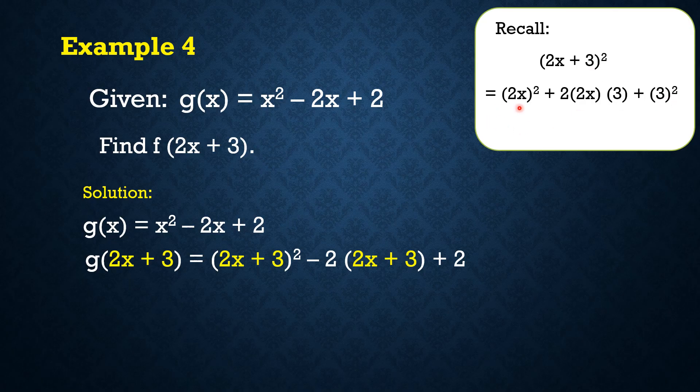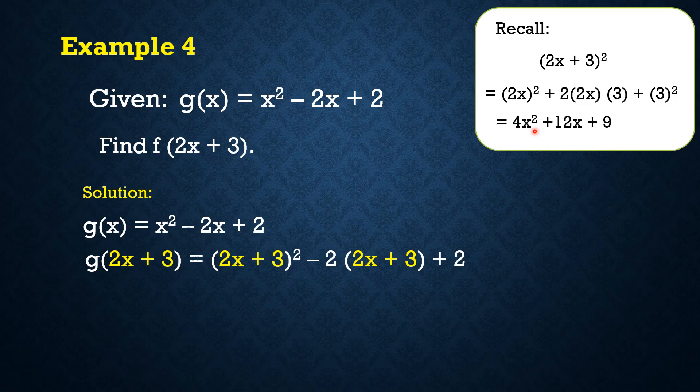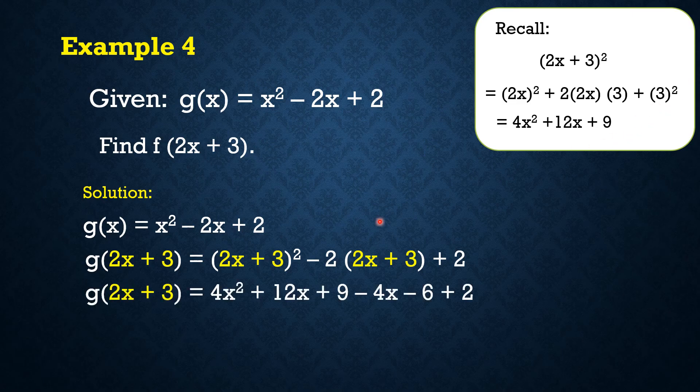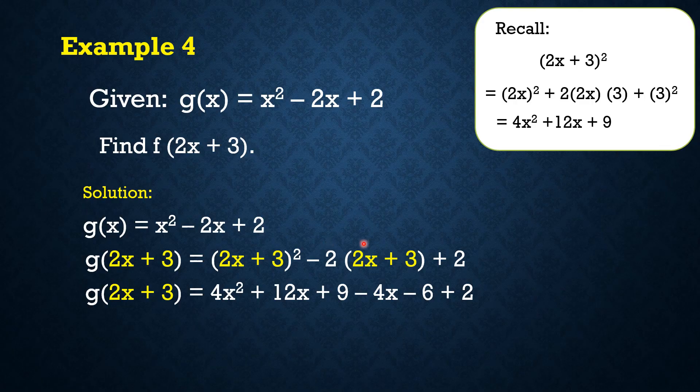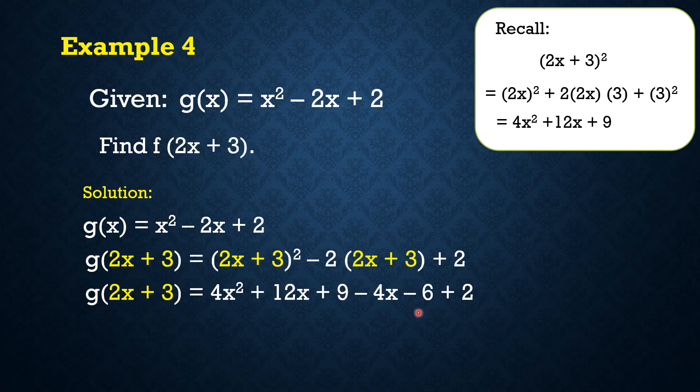Simplify, 2x squared means 4x². 2 times 2x times 3 is 12x, and then 3² is 9. So technically, si 2x + 3 squared, eto lang yun, 4x² + 12x + 9, and then we still have to simplify this. Negative 2 times 2x, expand natin, negative 4x, negative 2 times positive 3 is negative 6, and then we still have plus 2.